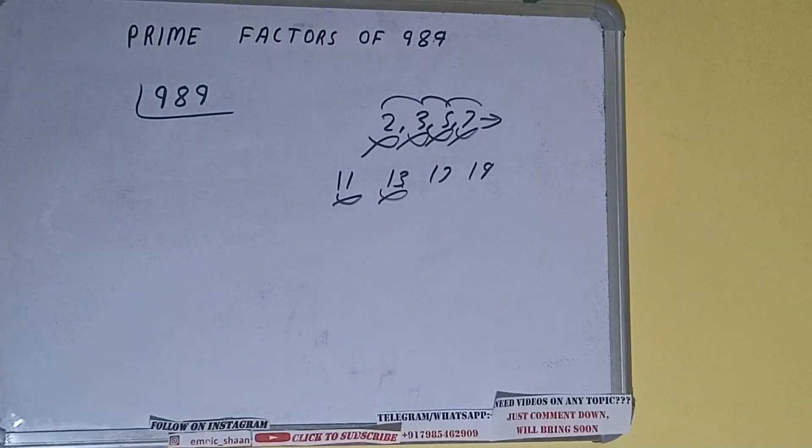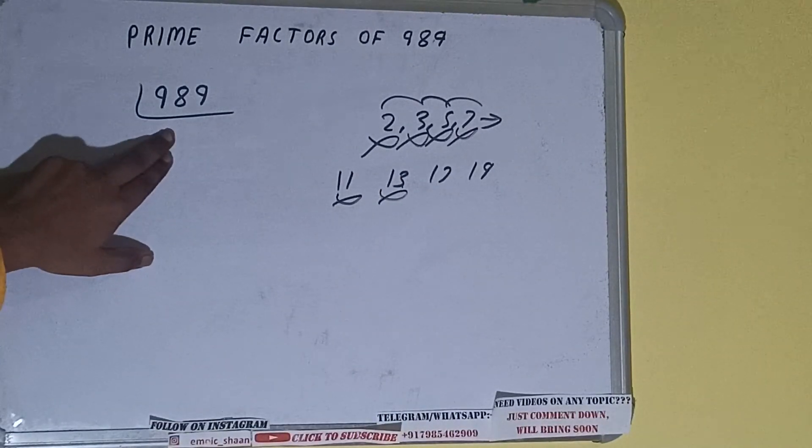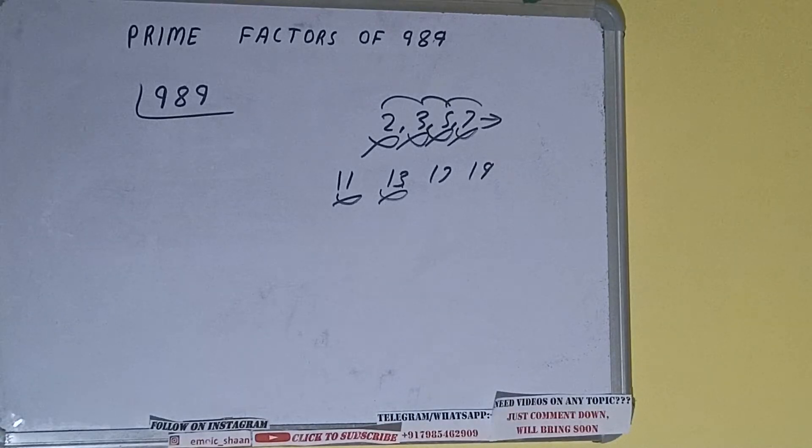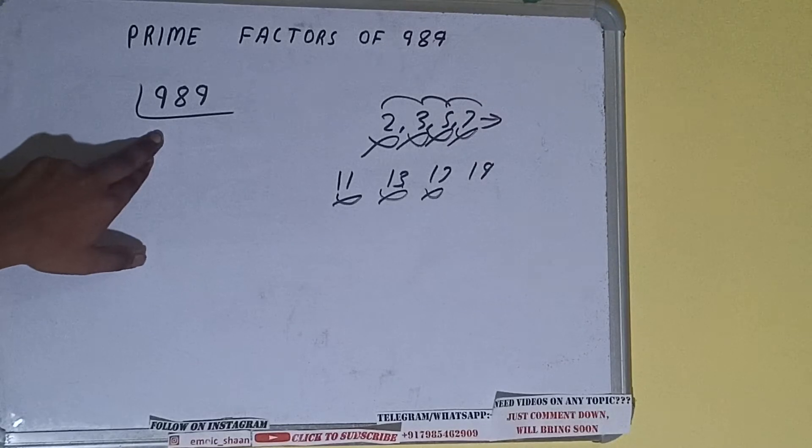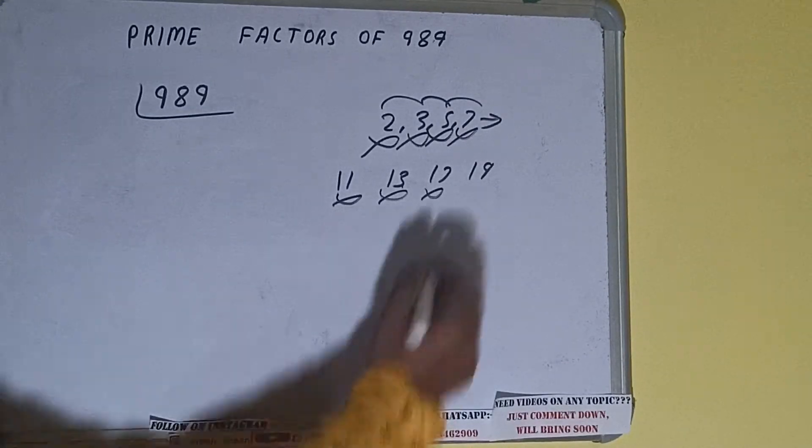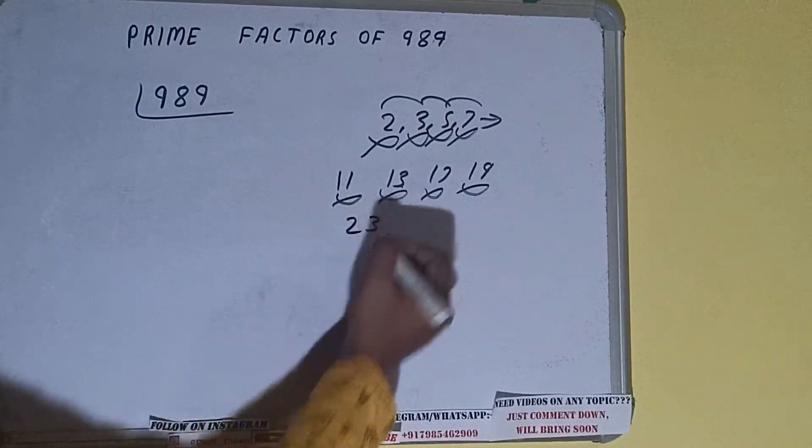Let's check with 17. 17, 5, 0, 85, 1, 3, 9—with 17 also not divisible. Let's check with 19. 19, 5, 0, 95, 3, 9—with 19 also not divisible. Let's check with 23.